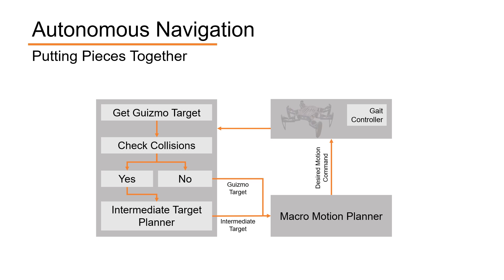Finally, this is how all pieces fit together. We define our target position using the GUISMO coordinate system. Afterwards, we check for collisions along the line of sight. If we have no collisions, we invoke our set point tracker and go straight to the target. Otherwise, we plan an intermediate point and head to that point, and from there we replan in order to achieve our main target. This concludes the algorithm. Enjoy the video of the implementation in action on the next slide.